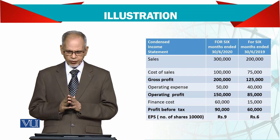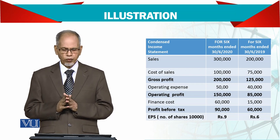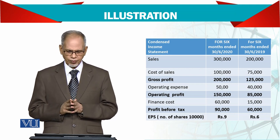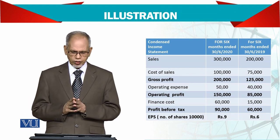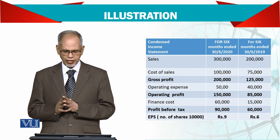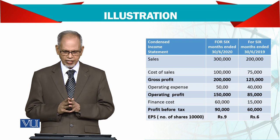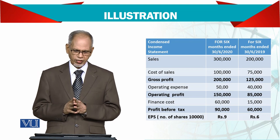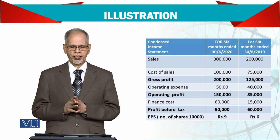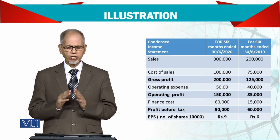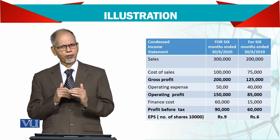The sales figures are shown, cost of sales accordingly, and there is a gross profit figure. Notice it is just brief — no detail — and then operating expenses are also listed.